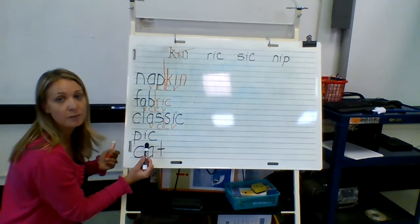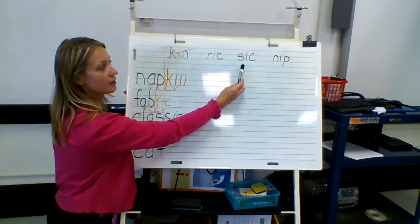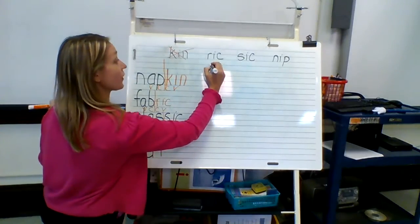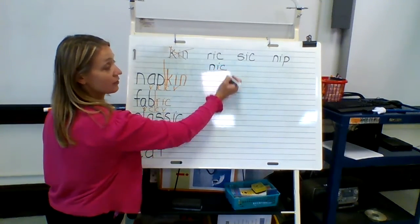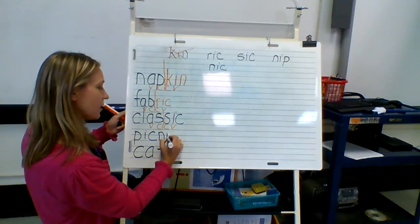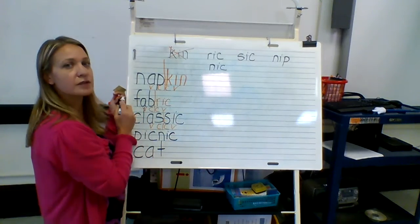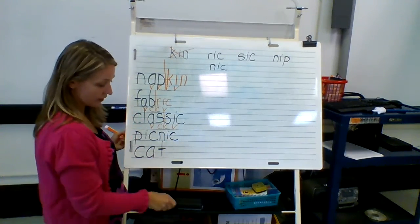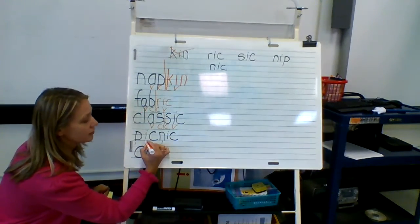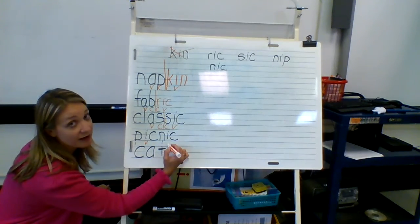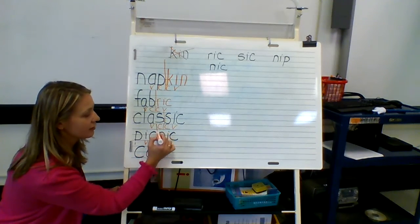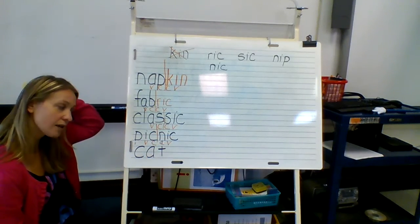So now we have 'pick.' What would it be — rick, sick, or nip? I forgot — I should have this up here because we're actually going to make the word picnic. So I'm going to add 'nick' down here. Sometimes teachers make mistakes too — we just got to roll with it. So we have picnic. The first thing we're going to do is find our vowels: I and another I. Then we find our two consonants. Picnic would be divided right there between the C and the N.